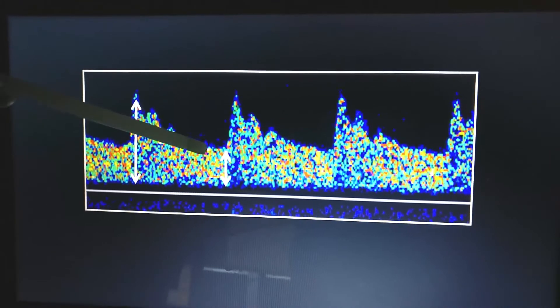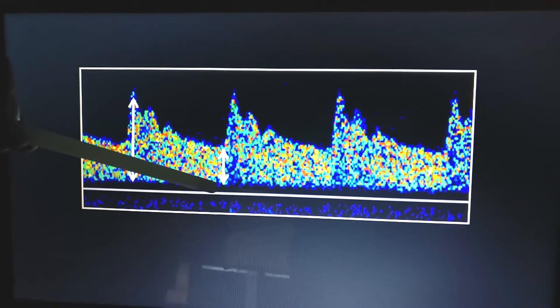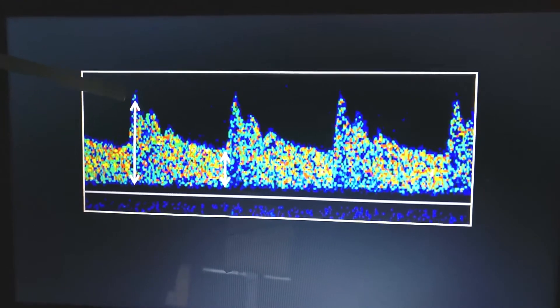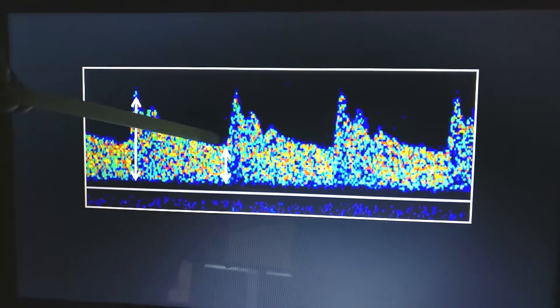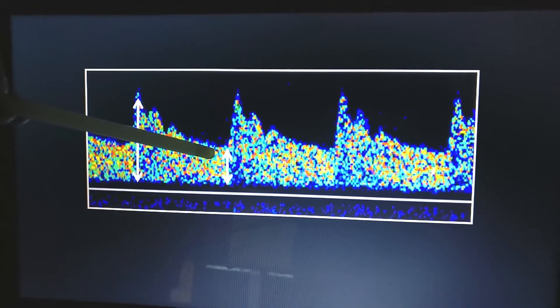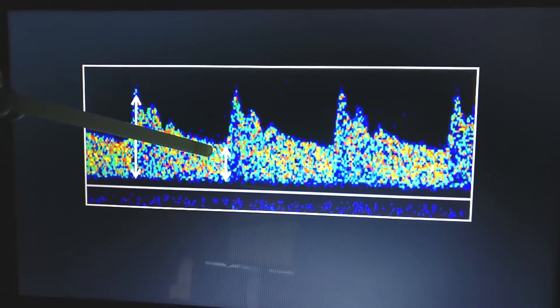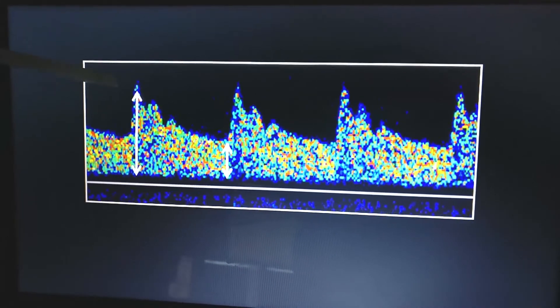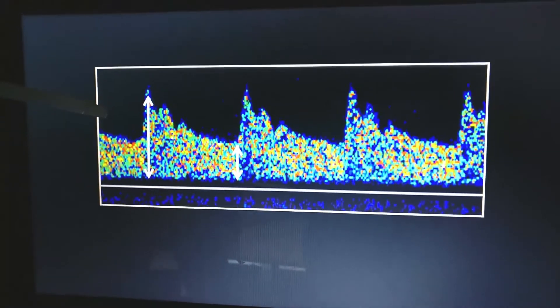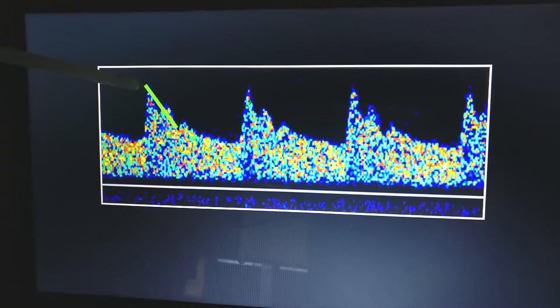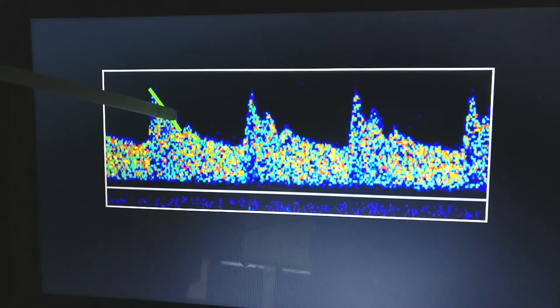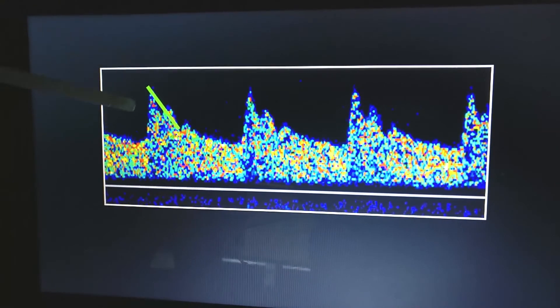One also needs to look at the end diastolic flow or velocity and compare it with the peak systolic flow or velocity. Normally the flow at the end diastole is approximately between 20 and 50 percent of the peak systolic flow. Also one needs to look at the slope of the systolic acceleration, slope of the late systolic deceleration, and at the peak.